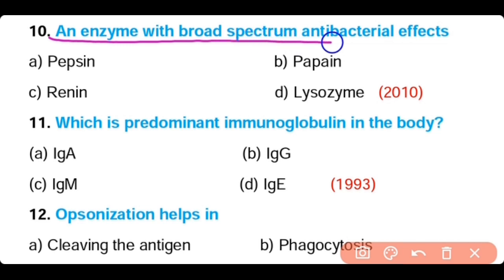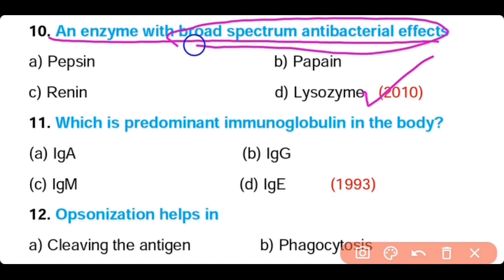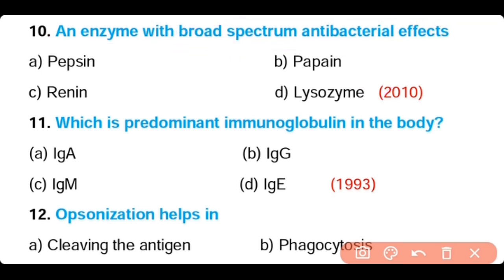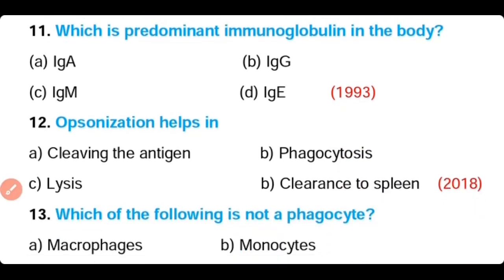Question number 10. An enzyme with broad spectrum antibacterial effect is: pepsin, papain, renin, or lysozyme. The correct answer is Option D. Lysozyme is an enzyme with broad spectrum antibacterial effect.